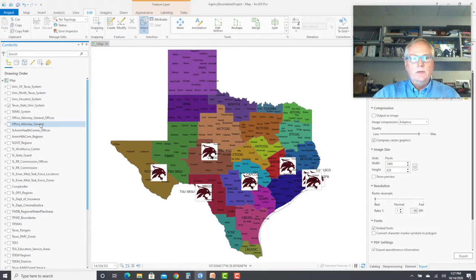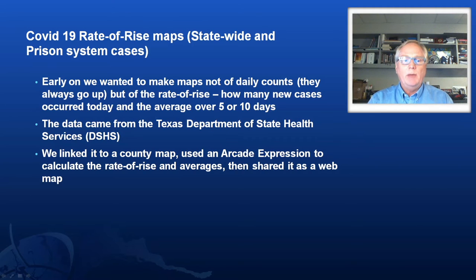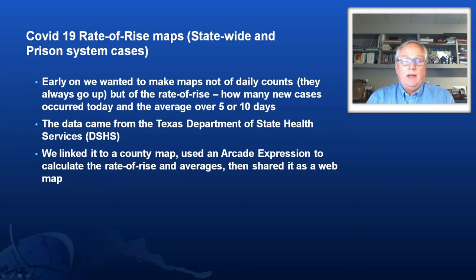Early on we were asked to do a rate of rise map shown by county statewide, and also later we were asked to do the same sort of map for the Texas Department of Criminal Justice — showing what the cases were doing prison by prison. It's not showing case counts, because those always go up. It's showing the change from day to day, and in March and April of 2020, that was pretty forward thinking. One of the interesting things we did was to use a lot of arcade expressions built in ArcGIS Pro, and then serve that up to ArcGIS Online. The arcade expressions transfer seamlessly to the online environment, and the pop-ups work exactly the same way.